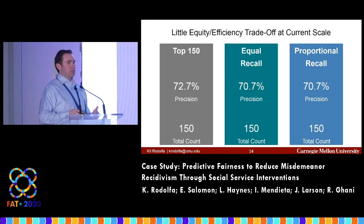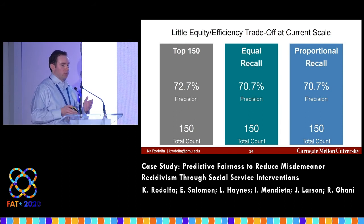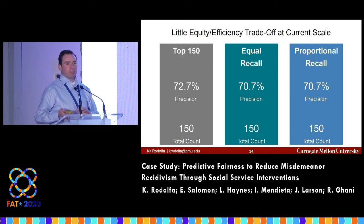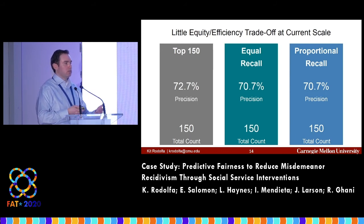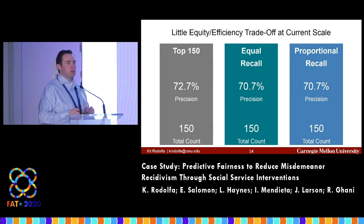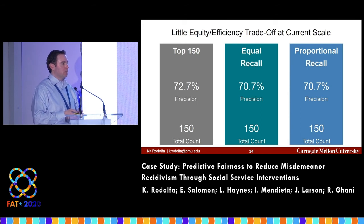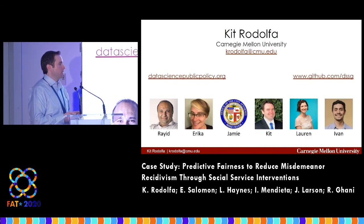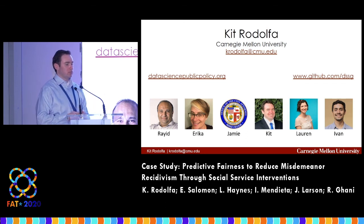Looking at the trade-offs between equity and efficiency at current scale across three options: the base model had about 73 percent recall, while the two models adjusted for more equity saw only a moderate — really quite small — drop in efficiency, down to around 71 percent. Los Angeles is working on implementation of the third version of the model to try to reduce disparities. We're also doing ongoing research thinking about extensions of this work.